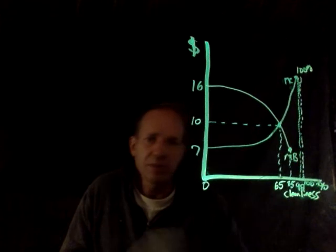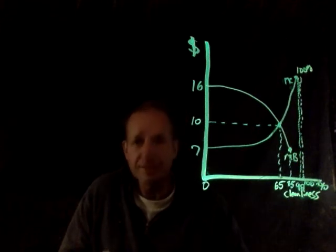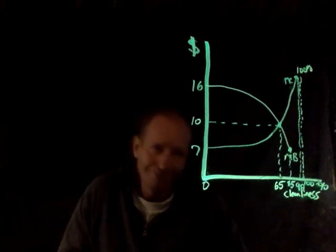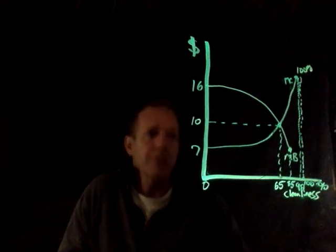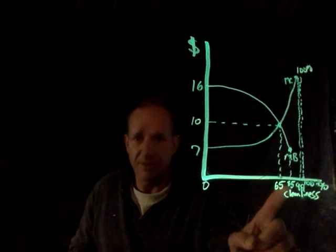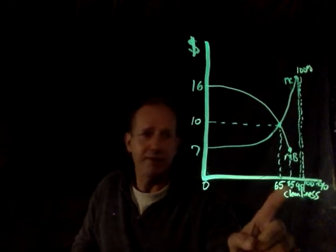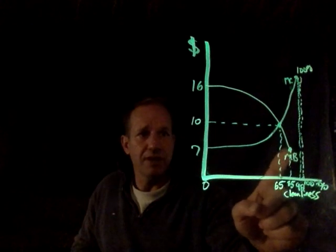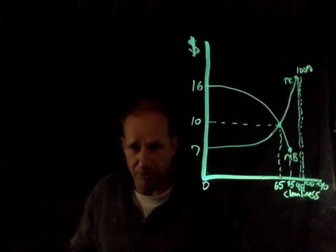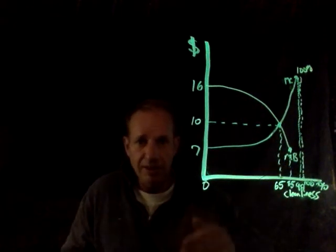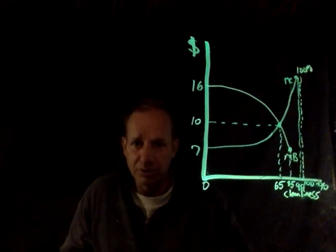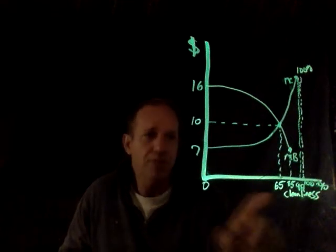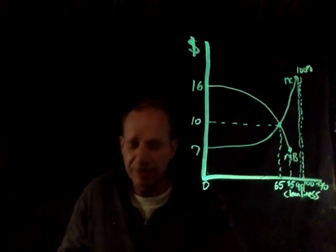It would be a fairly easy guess to say 65, because that's where we have an equilibrium. But the real reason is that if we continue to move out from 65 to the next data point — say, 85 — the marginal benefit of getting to 85 would be well lower than the corresponding marginal cost. Getting there would cost more than it would benefit, so we would stop our level of cleanliness at 65%.